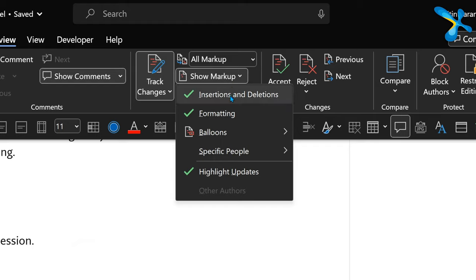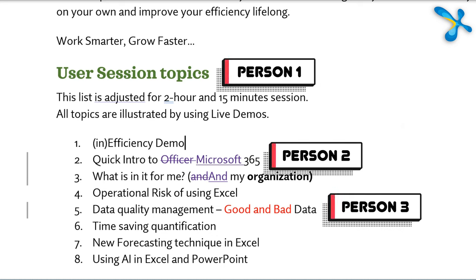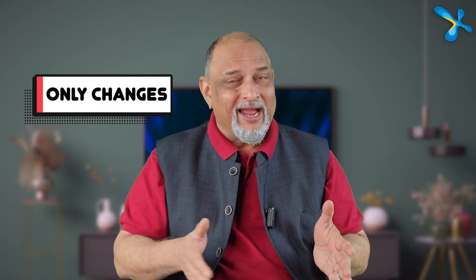Many people get confused by the multiple colors. Each person making changes gets a different color. Don't worry about who is which color — just hover with the mouse over a change and you will see the person's name and the timestamp. There is also a very interesting bonus tip related to this, so watch out for that later.